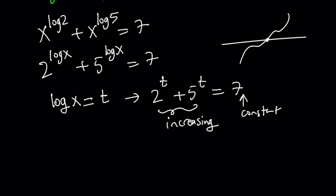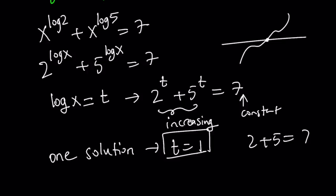Well, t equals 1, right? That should be obvious. And we only have one solution because our function is increasing on one side and constant on the other. That one solution is t equals 1. Why? Because 2 plus 5 equals 7. It's as easy as that.